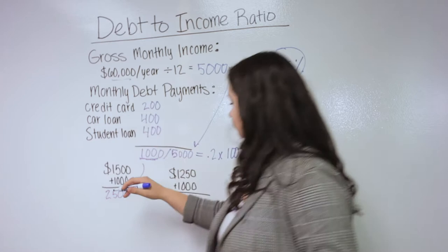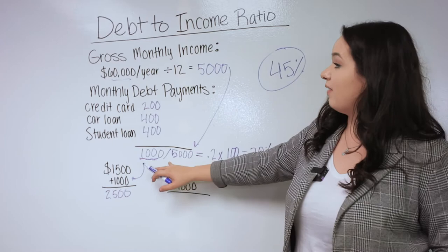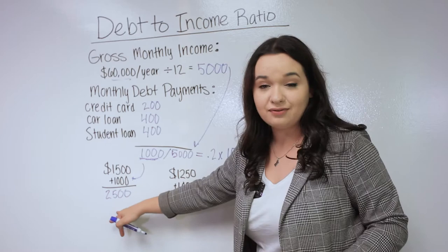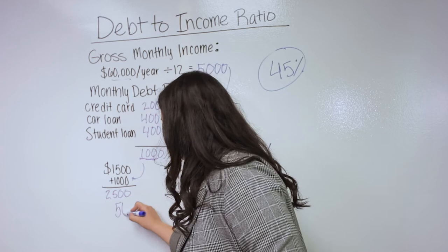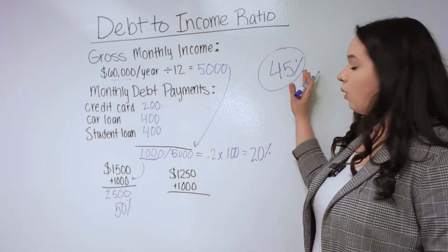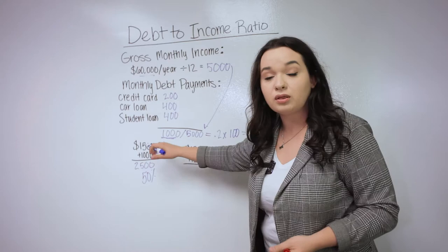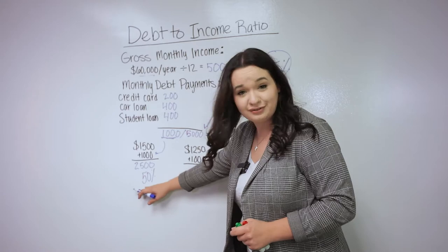If we divide $2,500 by $5,000, that gives us 0.5 times 100, which equals 50% DTI. This is a little bit high for the goal of staying under 45%. Since this $1,500 mortgage payment pushes us into a higher DTI, I'm going to work it with a $1,250 payment instead.